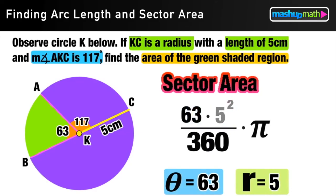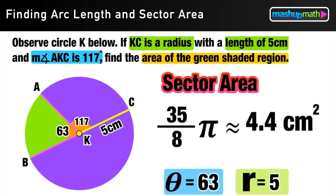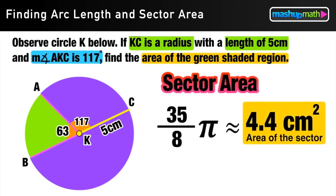And now we can evaluate. 63 times 5 squared is the same as 63 times 25, which equals 1575. Then divide that by 360. This is equivalent to 35 pi over 8 or approximately 4.4 centimeters squared. The area of the sector shaded in green.